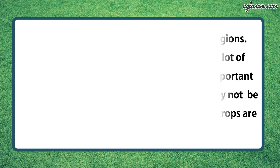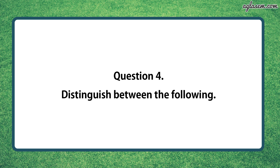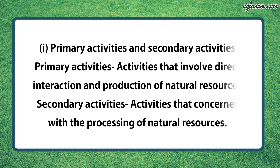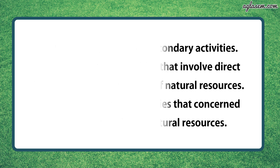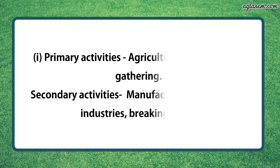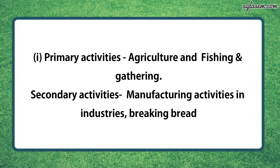Question number four says, distinguish between the following. First part is, primary activity and secondary activity. Primary activities are those activities which involve direct extraction and production of natural resources, whereas secondary activities are those activities which are concerned with the processing of natural resources. Examples of primary activities are agriculture, fishing and gathering. Whereas examples of secondary activities are manufacturing activities in industries and baking bread.